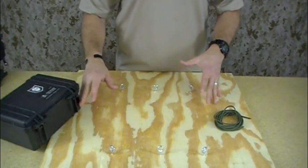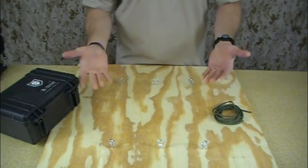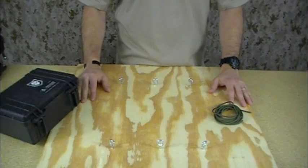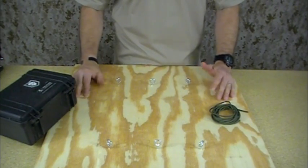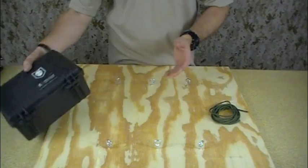Basically what we've got is a board mounted with six eyelets. So this is to kind of create a replica of lashing points or tie down points, and what the diamond hitch is used for is to secure load.